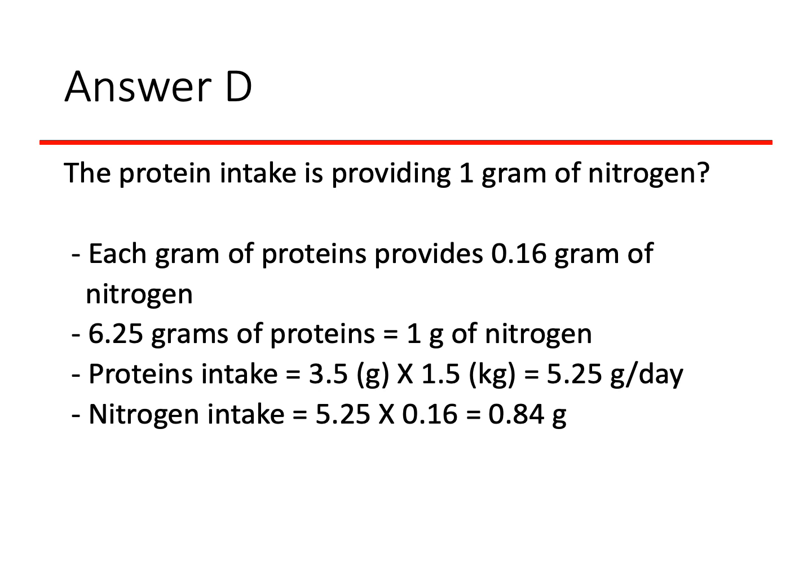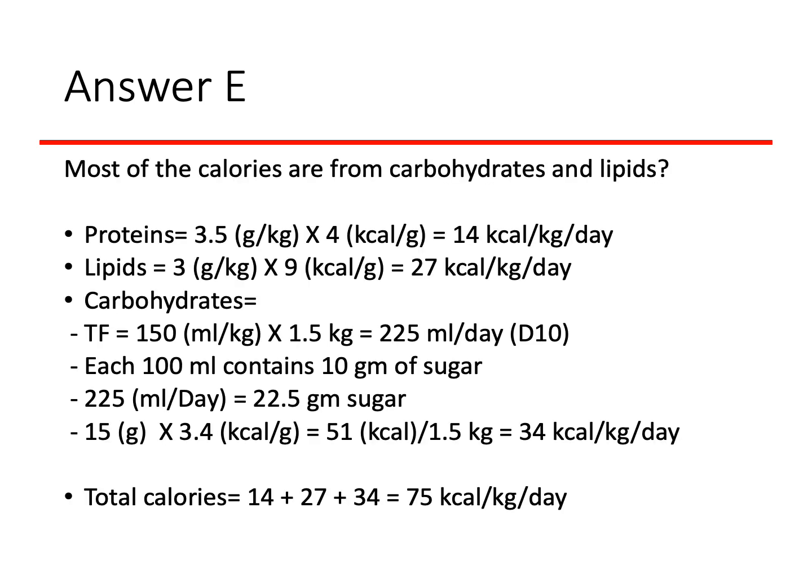Answer D states the protein intake is providing 1 gram of nitrogen. Each gram of protein provides 0.16 grams of nitrogen, meaning every 6.25 grams of protein provides 1 gram of nitrogen. The baby's protein intake is 3.5 g/kg × 1.5 kg = 5.25 grams per day. So nitrogen intake = 5.25 × 0.16 = 0.84 grams of nitrogen — not 1 gram. Answer D is also not correct.